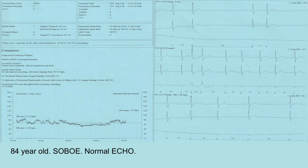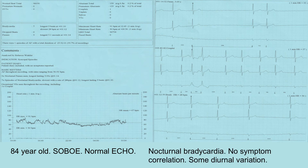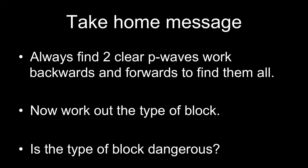This is an 84-year-old patient, short of breath, with a normal echo. On the 24-hour monitor, the patient does have pauses and nocturnal bradycardia, but there is no symptom correlation. There is some diurnal variation — at night the heart rate is slow and it increases during the day. Therefore, no therapy is required.